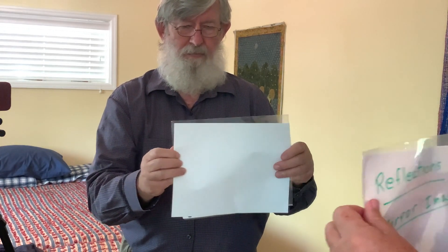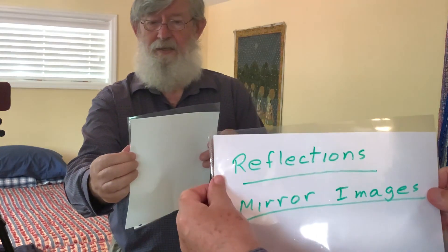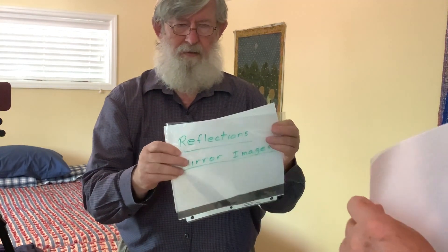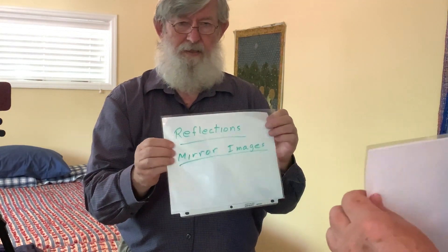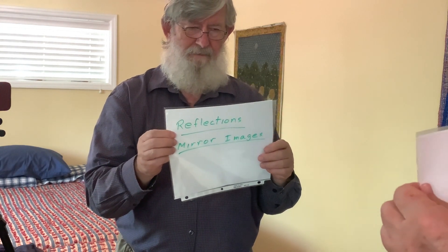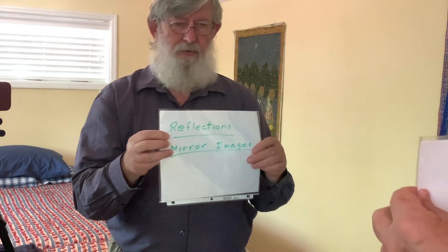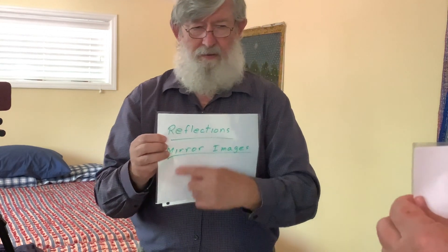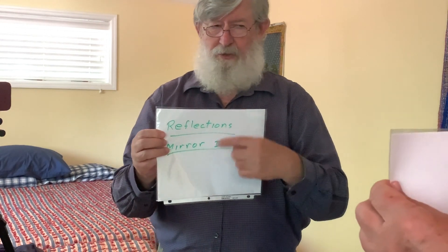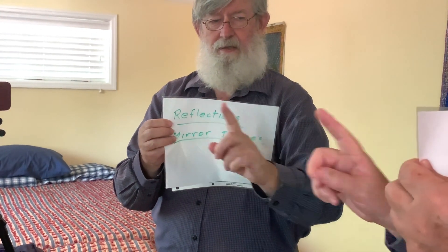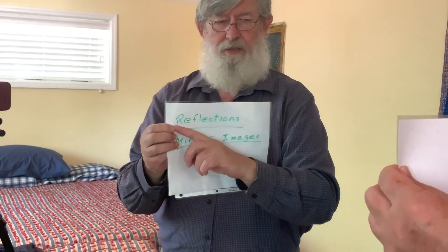Put the white behind and you can see it here, then put white in front and you can see it there. So what's really happening is every point on the object is reflected straight across to an equal distance behind.